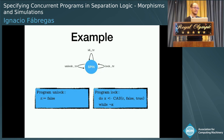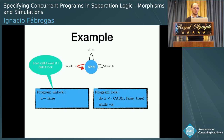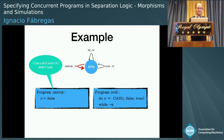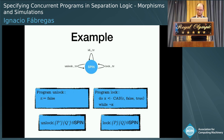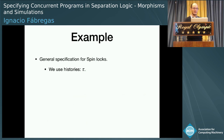For unlocking, the program is a little bit easier. We will just try to write false into the lock. The thing is that in this specification, I can call unlocking even if I didn't lock before. So the idea is that the lock will have this type — some precondition, postcondition — and we will say it's in the resource, a spin. And the same thing with unlock.